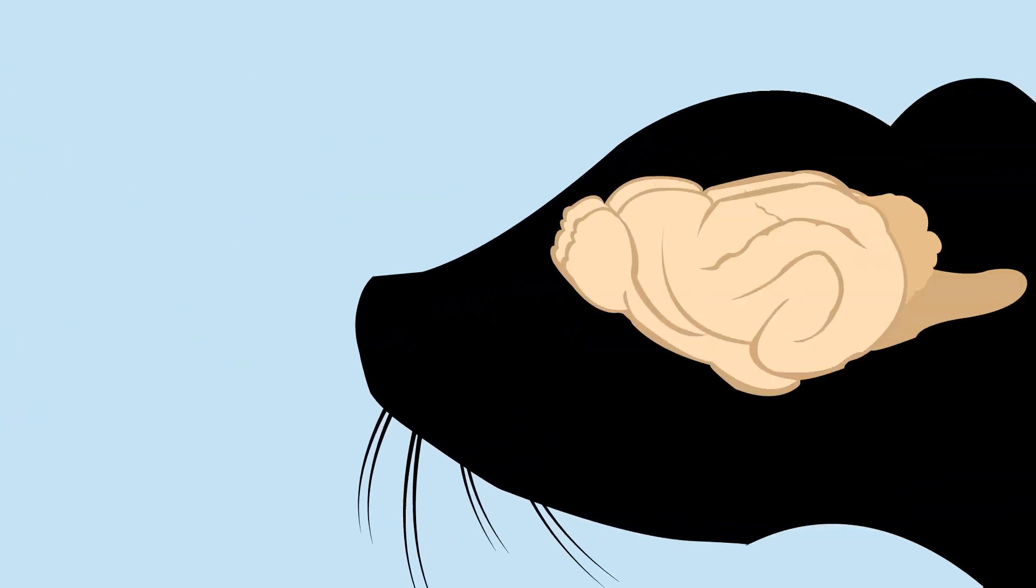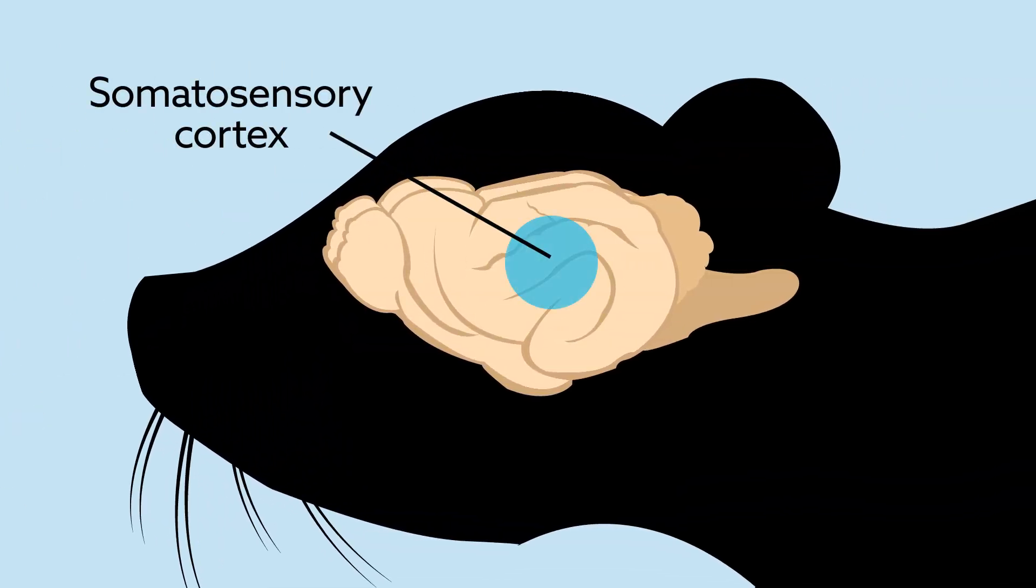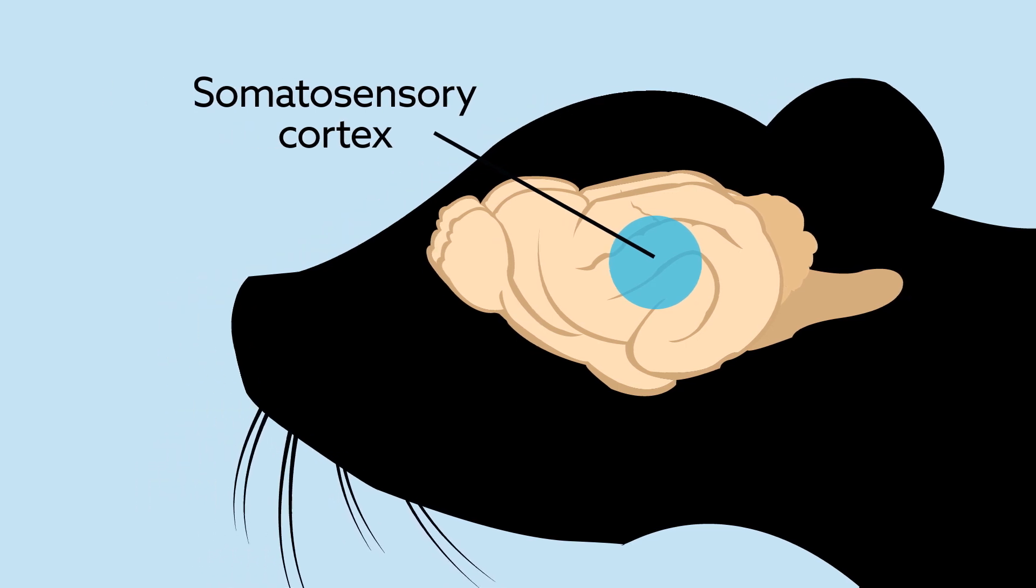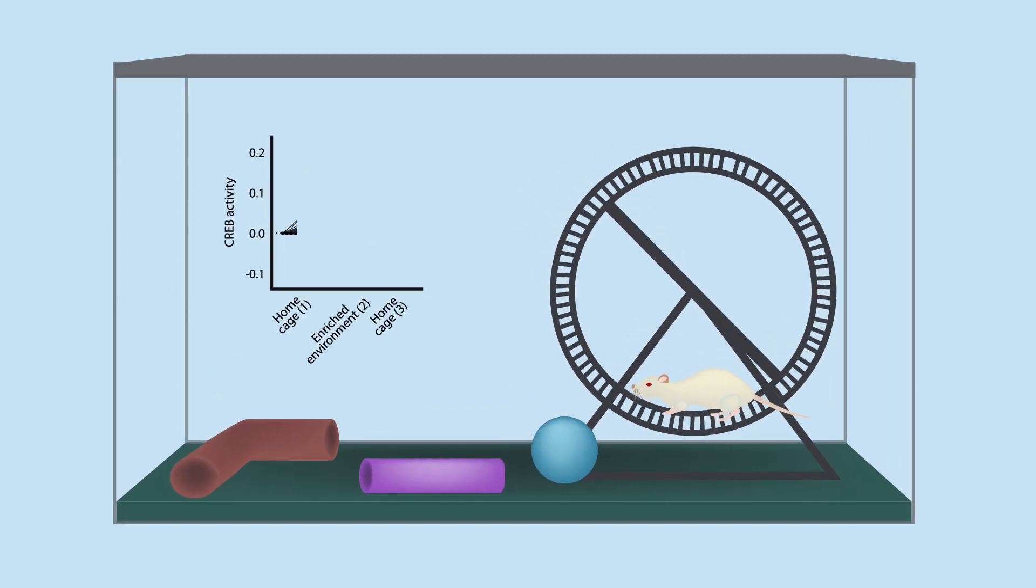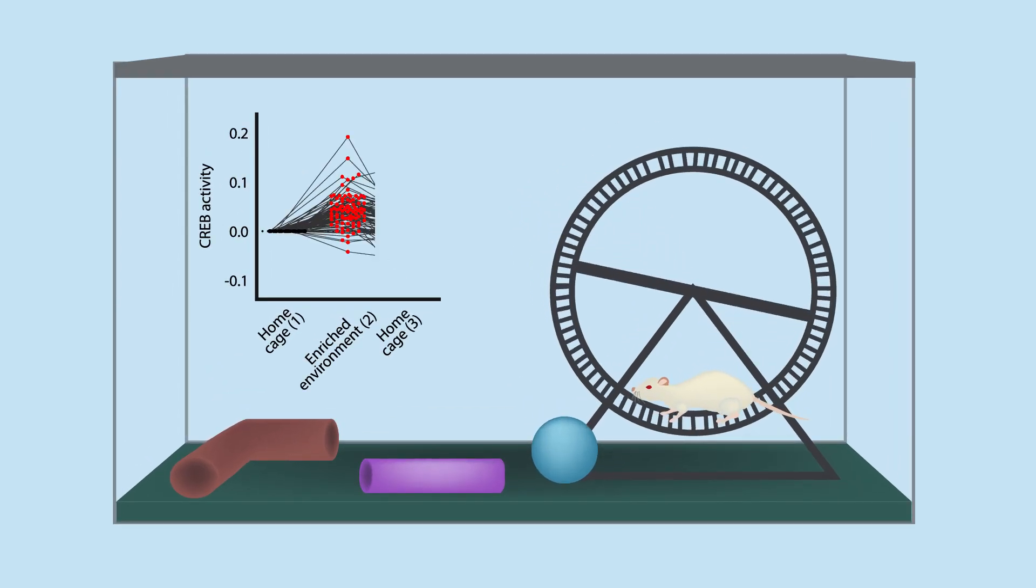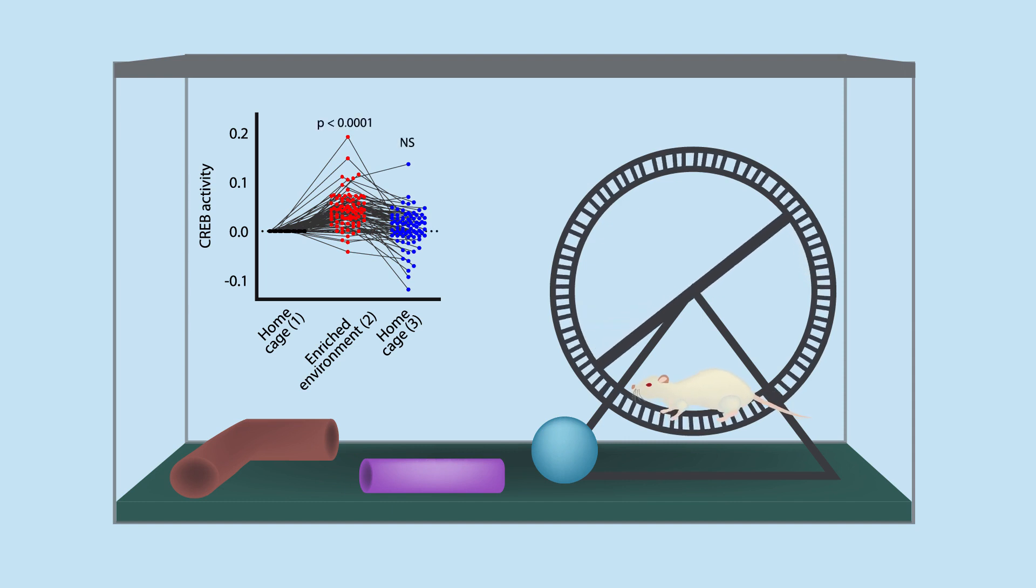Then they tracked CREB activity in the somatosensory cortex, which is important for detecting tactile stimuli from the mouse's whiskers. They found that CREB activity was increased after the mice spent a few days in an enriched sensory environment, which indicates that it is possible to track plasticity in the mouse brain over time.